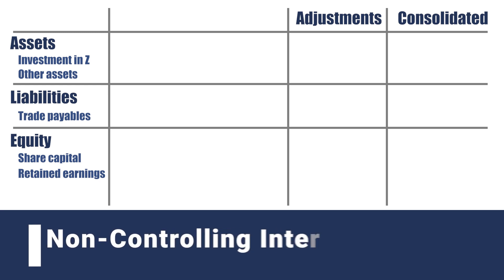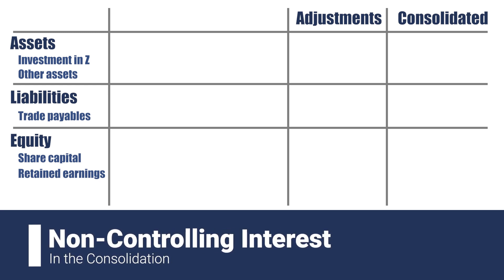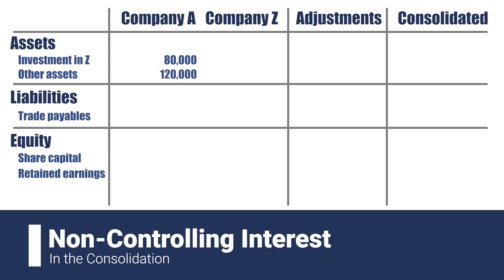But how exactly does it happen? Continuing from the simple structure we discussed, let's assume that for Company A and Company Z we have the following balance sheets, and we have to consolidate them for the year-end reporting. Company A's assets are composed of two items: its investment in Company Z amounting to $80,000, and other assets amounting to $120,000. A's equity is composed of its own share capital and retained earnings, and lastly it has some trade payables.